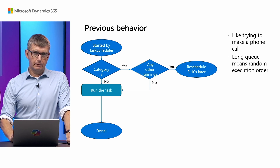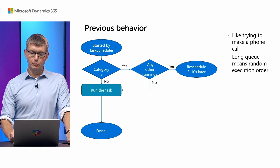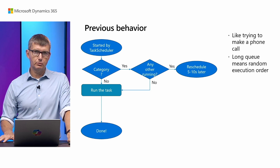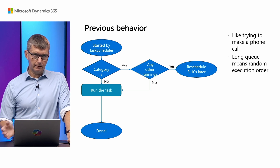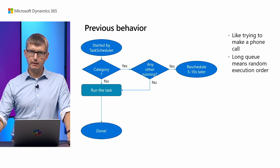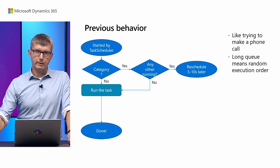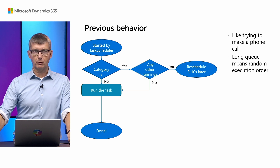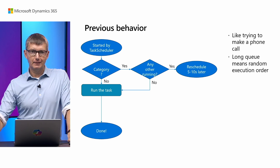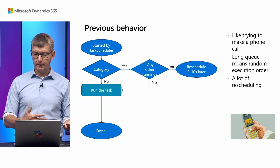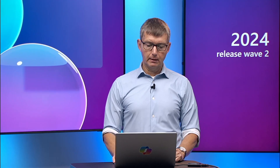That works fine if very few people schedule at the same time. But if there's a long queue, you need to try many times before you get through — like repeatedly calling a pizza delivery or doctor. It also means the execution order is random: even if you were the second to call, you may be the last to get through. And with a long queue, we have to reschedule a lot. That's the specific thing we have now changed.